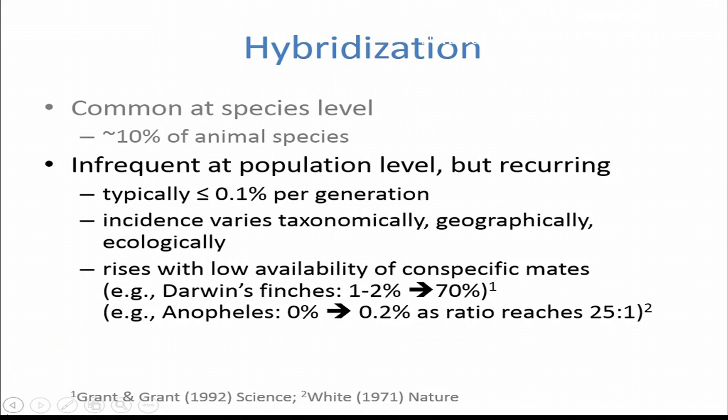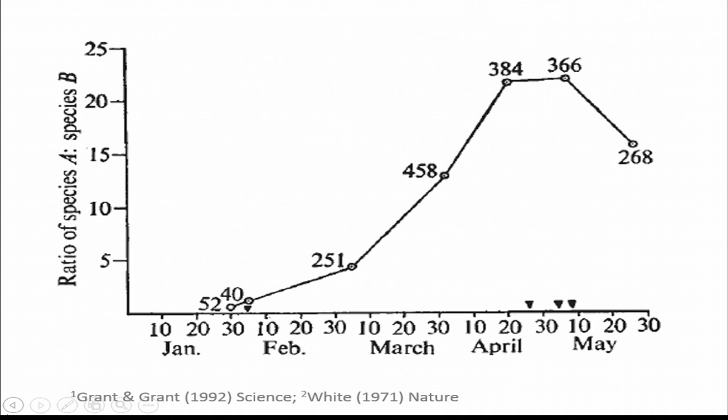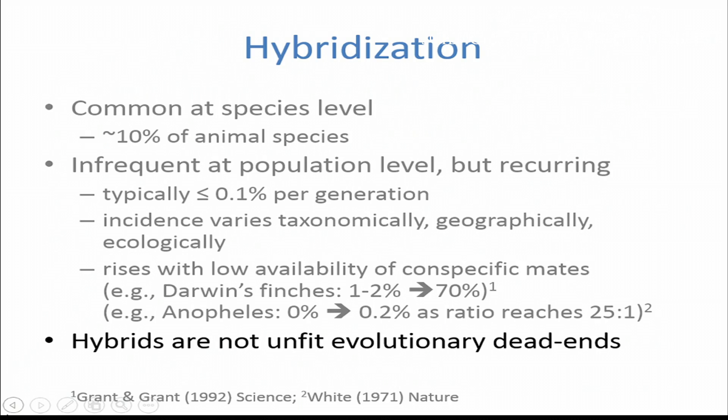Darwin's finches is one well-known case, another being Anopheles. From a 1971 Nature paper, over the course of the rainy season you can see that the ratio of species A to species B shifts such that when there's a very high skew, that's where we see most of the hybrids occurring. None of this would matter if the hybrids don't backcross — that would be an evolutionary dead end — but in fact most hybrids of closely related species are viable, they're fertile, they backcross to either parent, and this makes them a conduit for gene flow between species.